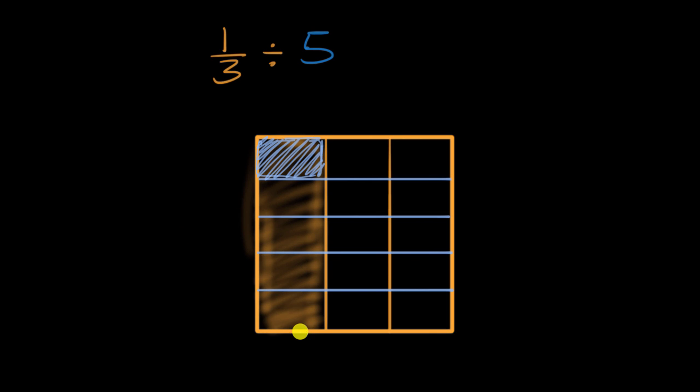Well, what I've done now is I've split my whole into 15 equal sections. How do I know that? Well, I could count them. One, two, three, four, five, six, seven, eight, nine, ten, eleven, twelve, thirteen, fourteen, fifteen.